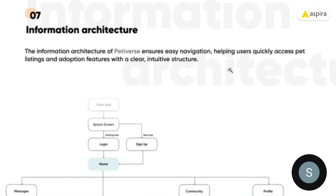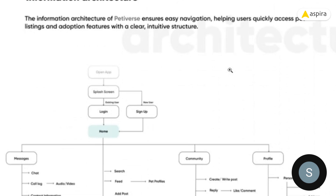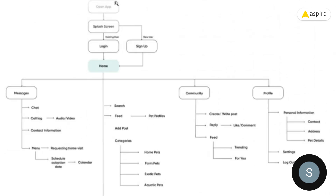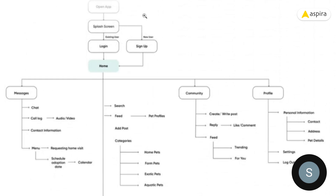After the empathy mapping comes information architecture. After opening the app you get a splash screen. If you're a new user you go to sign up; if you're an existing user you can log in. Then you get to the homepage, which has three pages to navigate to: messages, community, and profile.